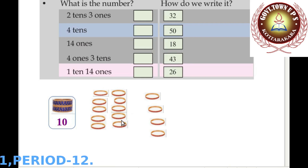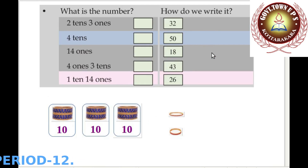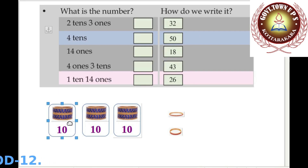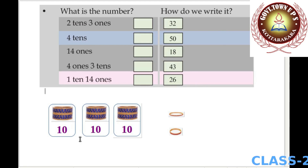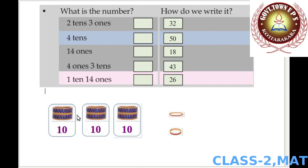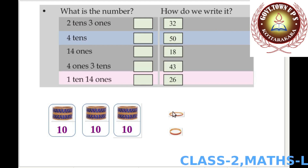How do we write 32? How many tens and ones? 10, 20, 30, 31, 32. Three tens and 2 ones. We can write 3 tens and 2 ones — that represents 32. Three tens: 10, 20, 30, plus 2 equals 32.